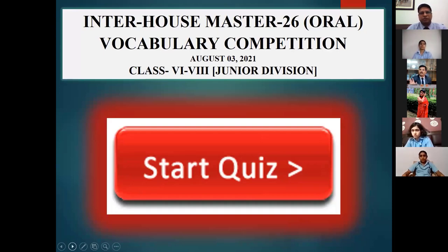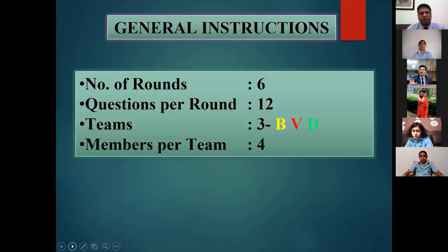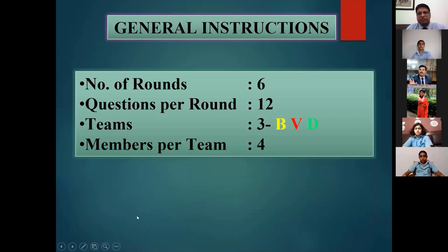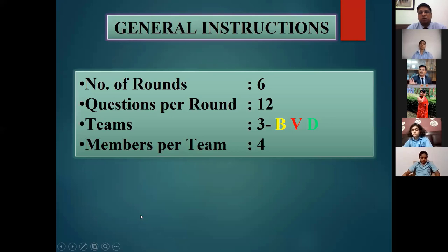Let's start with the quiz. First of all, let me repeat the general instructions. We are going to have six rounds in this competition. Each round will have 12 questions. We have three teams: one team from Buddha House, Vyas House and Dyanan House — three teams, each with four members.